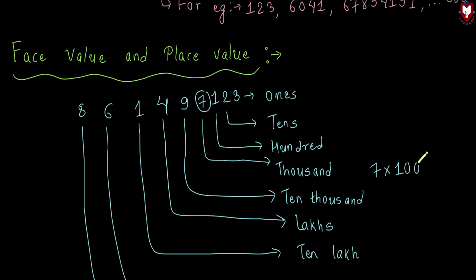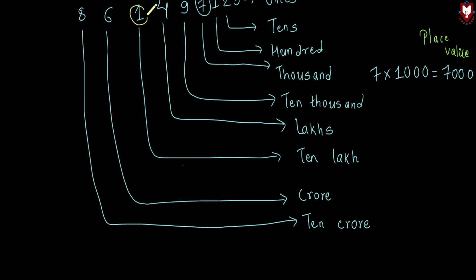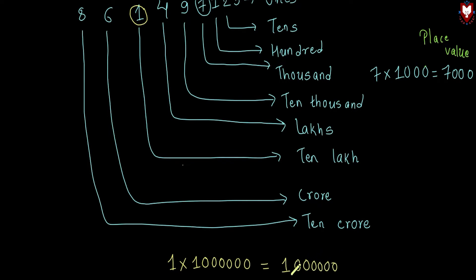So 7 into 1,000 equals 7,000. Then for the number 6: 6 into 10,000 equals 60,000. We multiply each digit by the value of its position to get its place value.